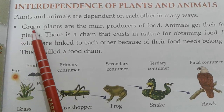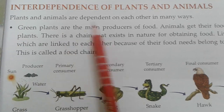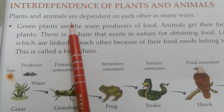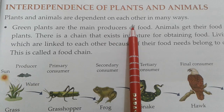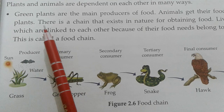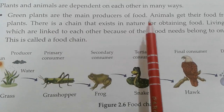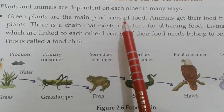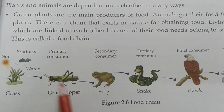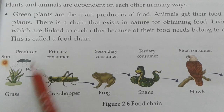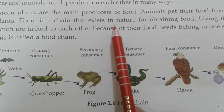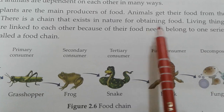Plants and animals are dependent on each other in many ways. Green plants are the main producers of food. Animals get their food from the plants. There is a chain that exists in nature for obtaining food.